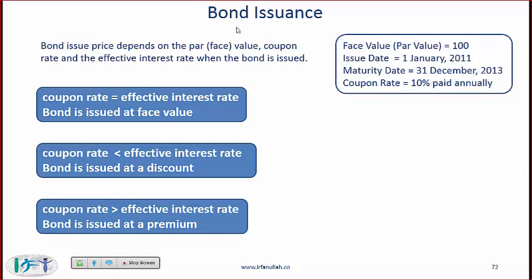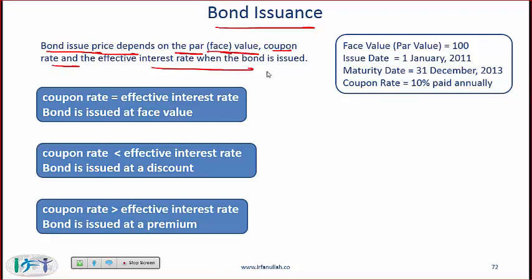The most important long-term liability is a bond or a long-term loan, and we need to understand what we report on the balance sheet when we issue a long-term instrument such as a bond. The bond issue price depends on the par value, which is the face value, the coupon rate, and the effective interest rate when the bond is issued.